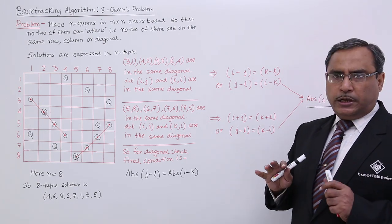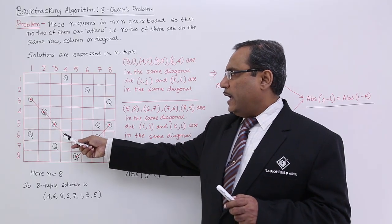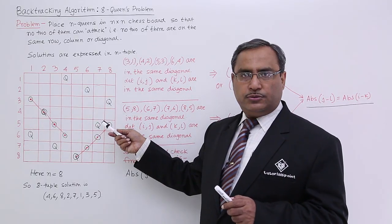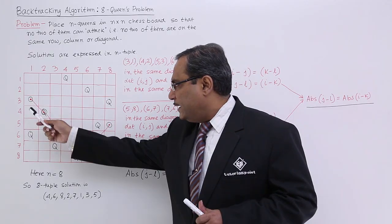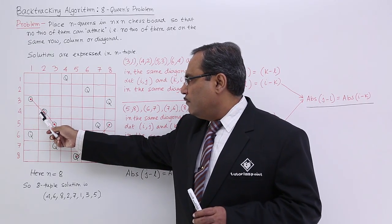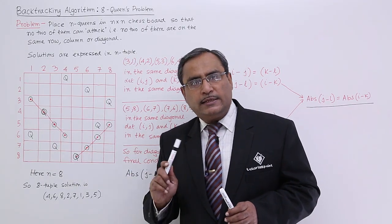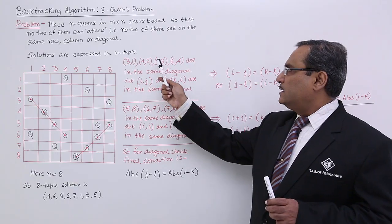Here I have considered arbitrarily, I have considered this particular diagonal. I could have taken other diagonals also, but only to trace the logic I have taken this particular diagonal. So here you see 3 1 4 2 5 3 and 6 4, they are in the same diagonal. These cells are in the same diagonal.